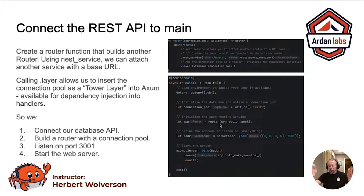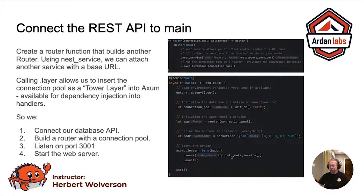Now that we know where to map things and offer the connection pool as a service, we set our listen address — in this case, any IP address, port 3001. We bind the Axum server to that address, call .serve, and our router type implements a function called makeIntoService, which turns it into a Tower service. Off it goes. It's running. We're awaiting it — it's not actually going to return unless the web server dies completely. So at this point, the program will just sit there being a server.